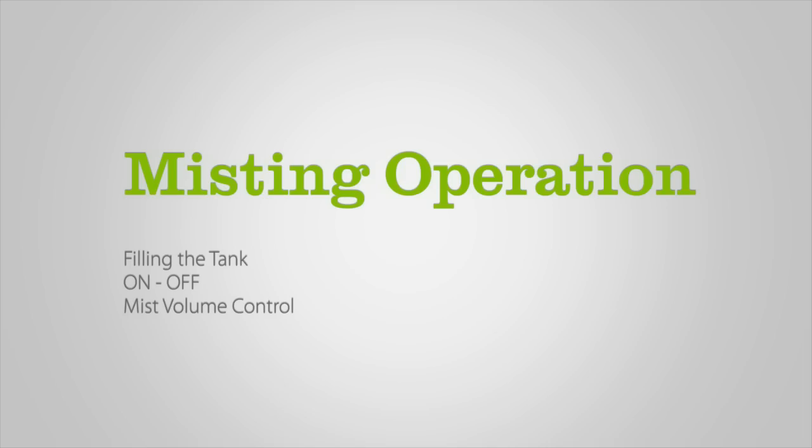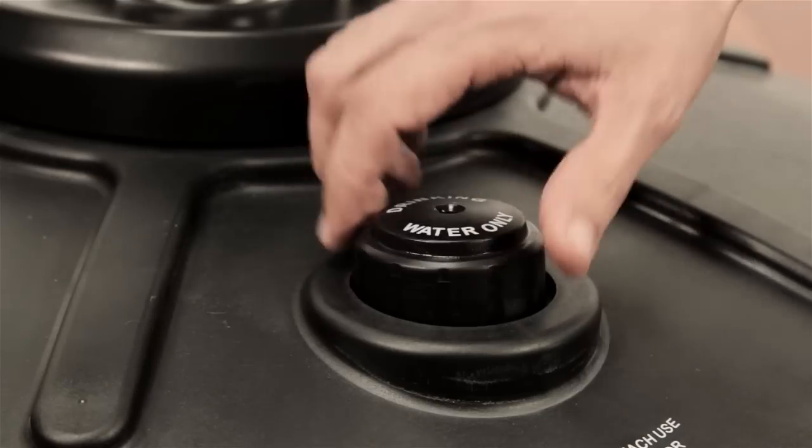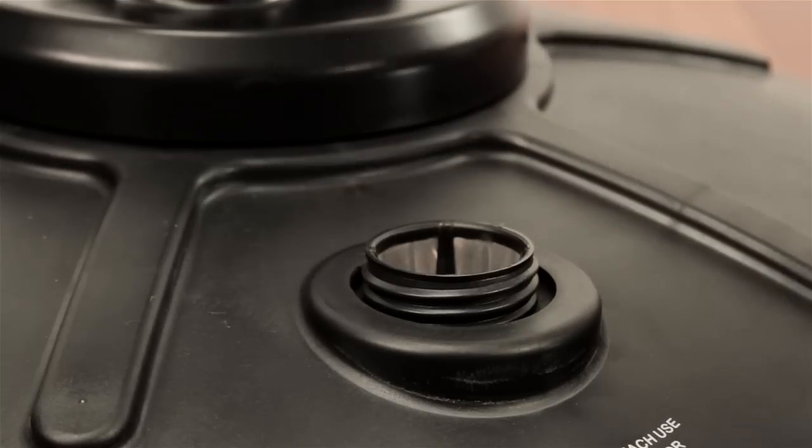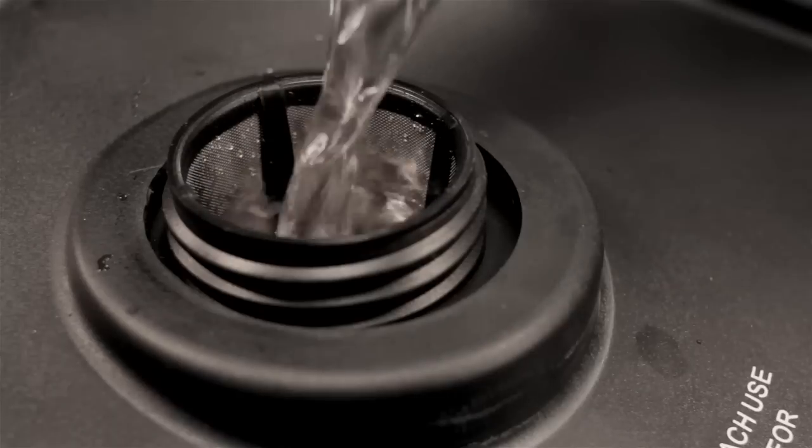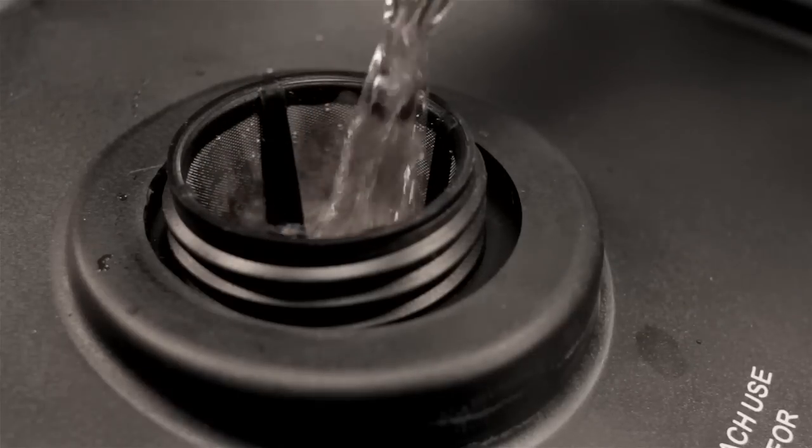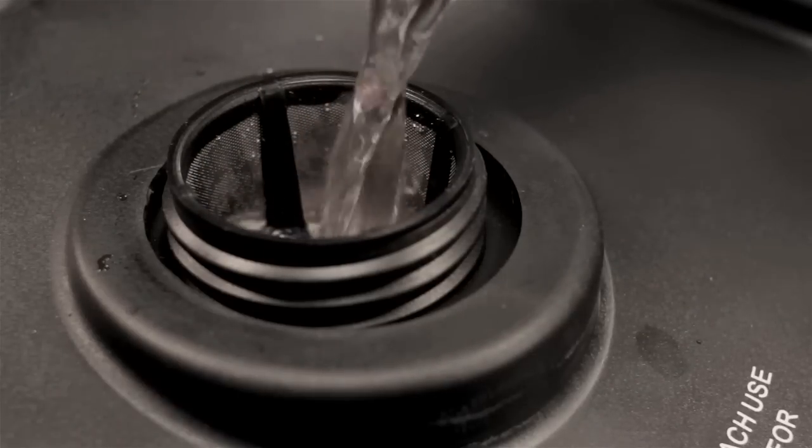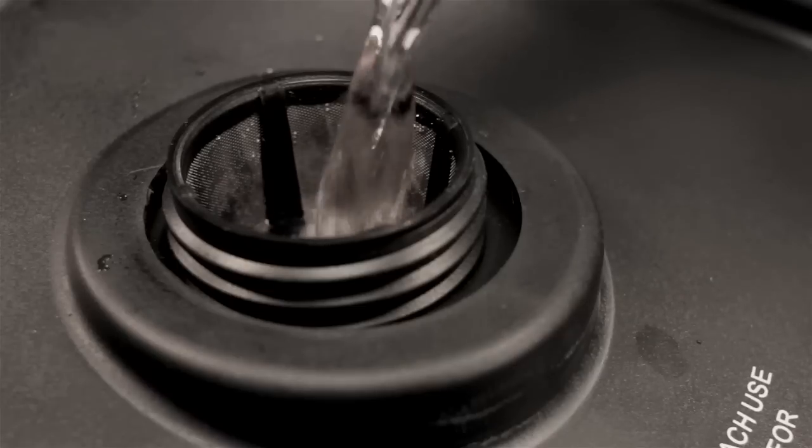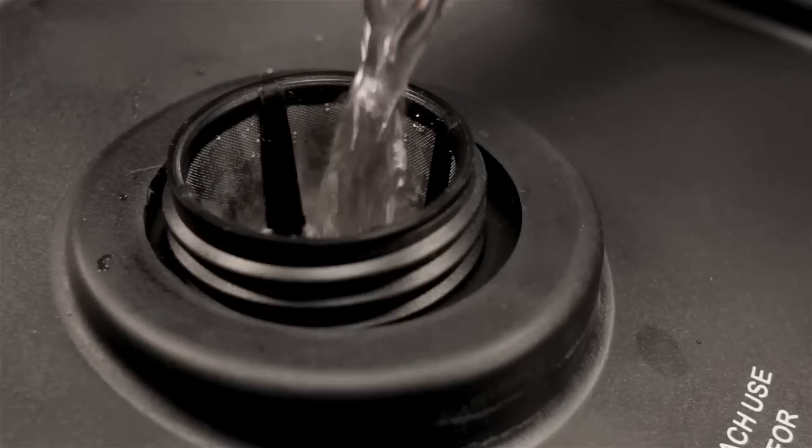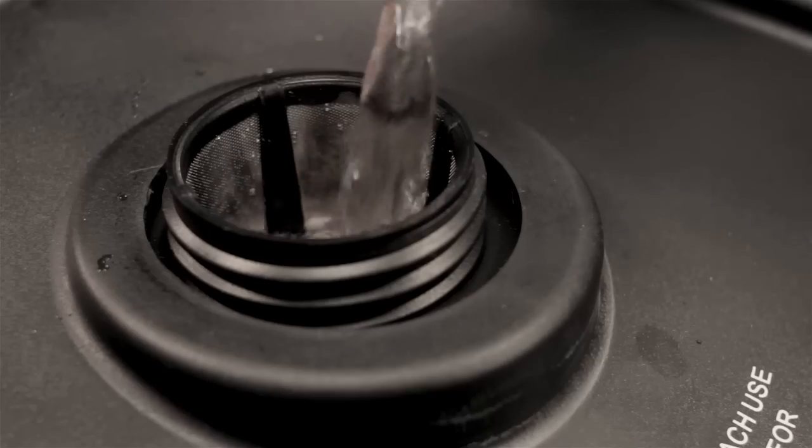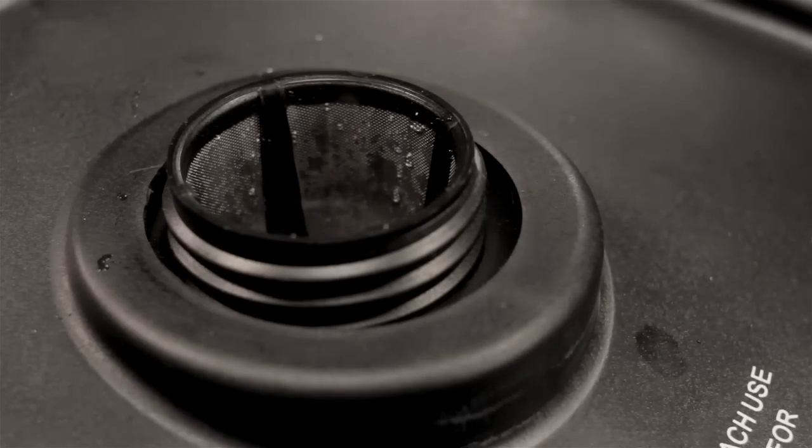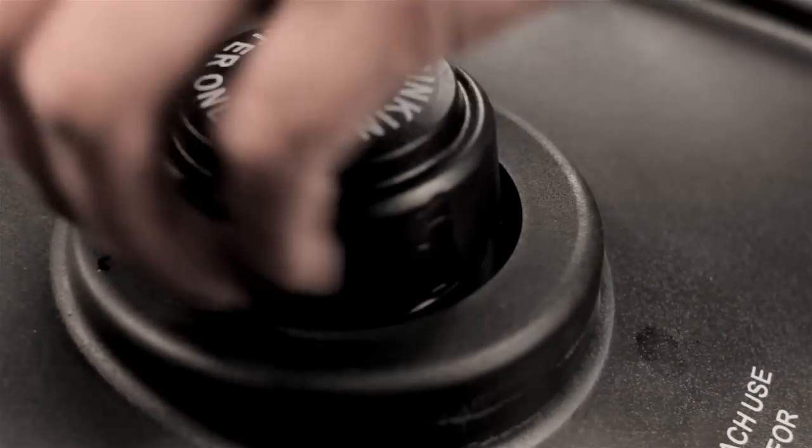Misting operation. Remove the fill cap on the power base assembly and pour clean water through the basket filter until the tank is filled to approximately 1 inch below the bottom of the basket filter. Although not required, you may add a half a teaspoon of unscented chlorine bleach to the water tank at your own discretion. Replace the cap hand tight.